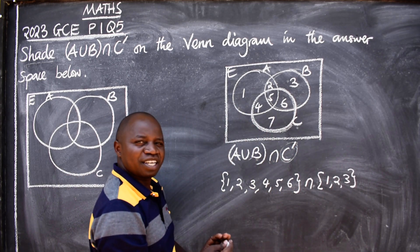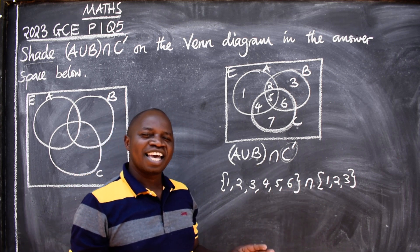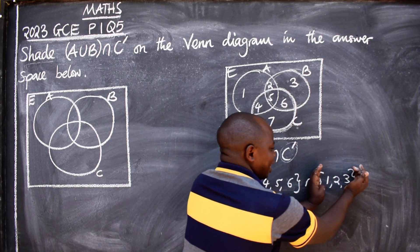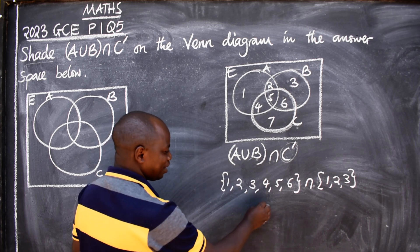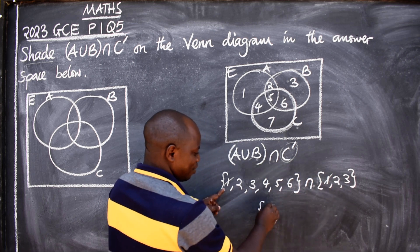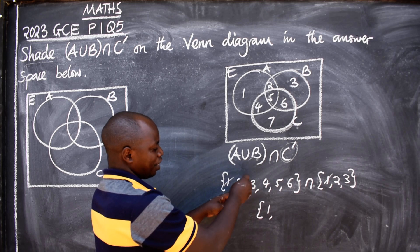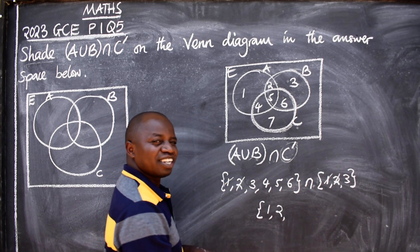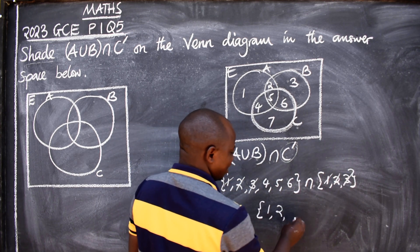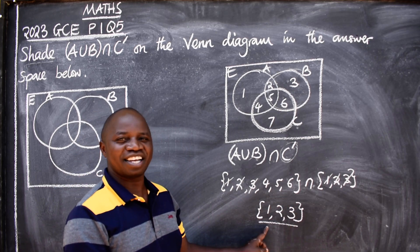On one side we have the set {1,2,3,4,5,6} from A∪B, and on the other side we have C complement = {1,2,3}. In between the two sets there is an intersection, which means elements that are in BOTH sets. What are those common elements? 1 is here and also there; 2 is here and also there; 3 is here and also there. So the intersection gives us {1, 2, 3} — and that is the answer.